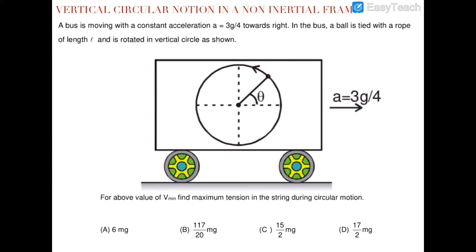There is a cart which is accelerating with acceleration 3g/4, and there is a vertical circular motion occurring inside the cart. We have to find the minimum velocity and the maximum tension in the string — the maximum tension being the focus of the first question.